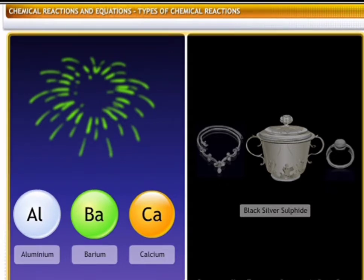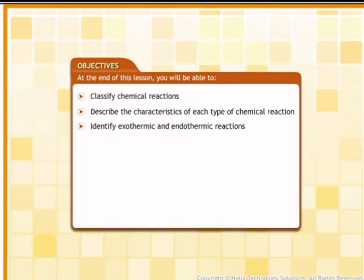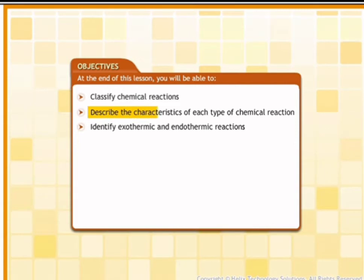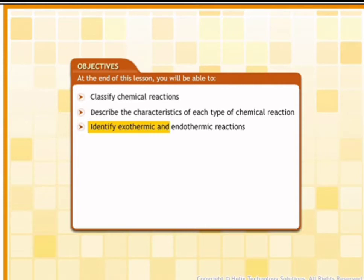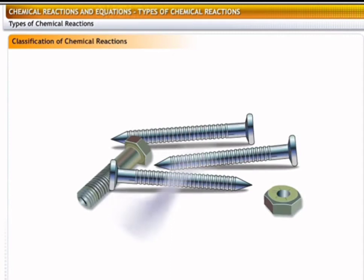All chemical reactions can be classified based on the different ways in which elements react with each other. In this lesson, you will learn how to classify reactions. At the end of this lesson, you will be able to classify chemical reactions, describe the characteristics of each type of chemical reaction, and identify exothermic and endothermic reactions.